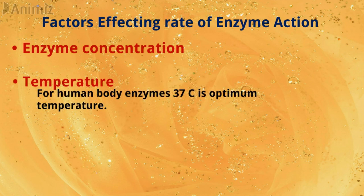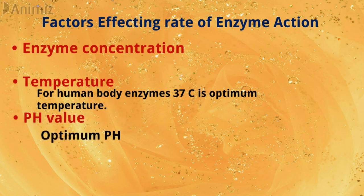The next factor is the pH value. Every enzyme functions most effectively over a narrow range of pH known as the optimum pH. Extreme changes in pH cause the bonds in the enzyme to break, resulting in enzyme denaturation.